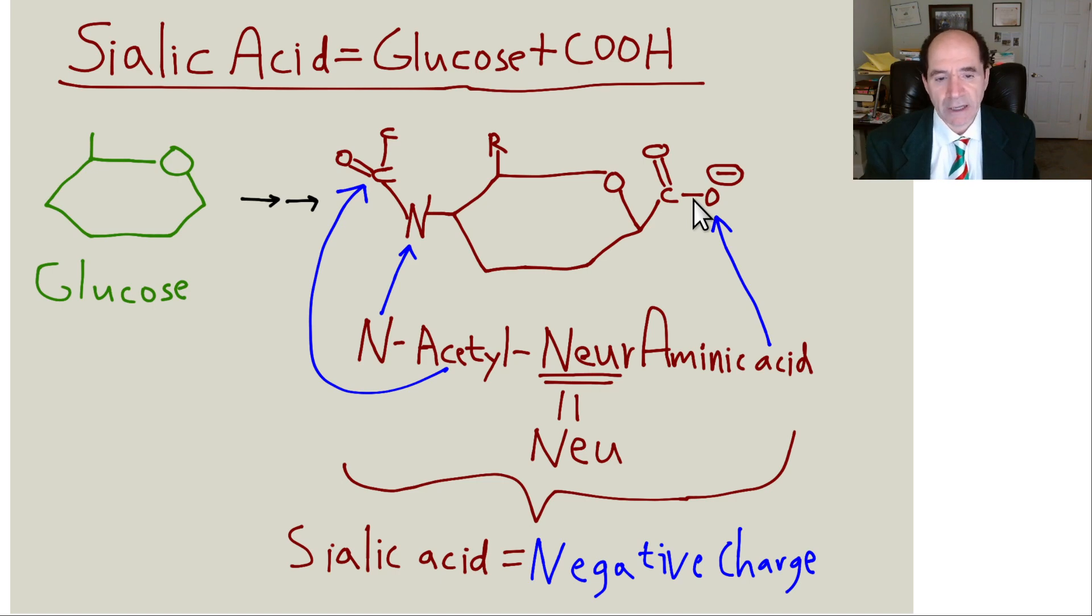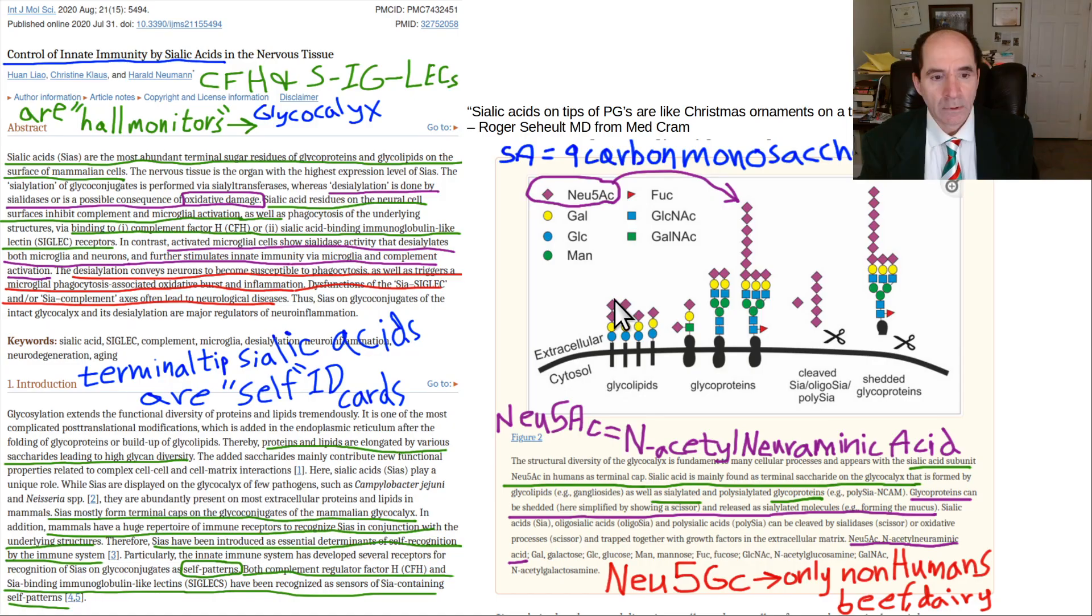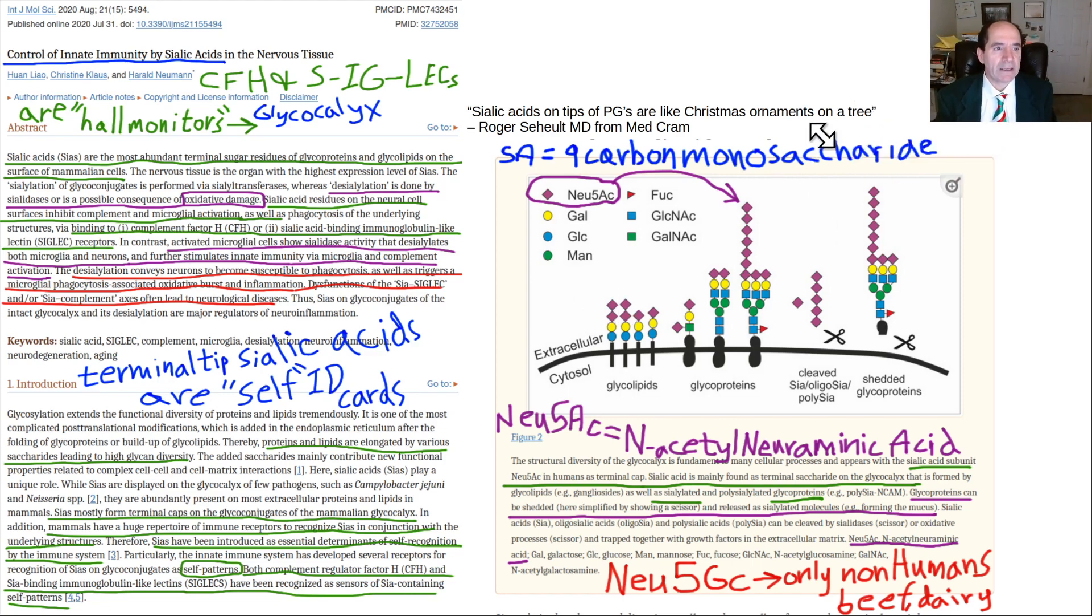Zeta potential is about maintaining a negative charge on the outer surface of a cell. Sialic acids provide information - they're like the identity card on the outer surface. Humans have a very specific type called Neu5Ac. The thing to remember is the A - think of the A in the human sialic acid as being like the A in the word human.